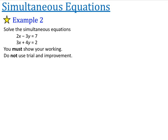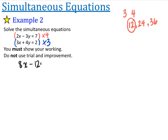Last time we made the x's the same. This time, just because I can, I'm going to make the y's the same. So I need to decide what do 3 and 4 have in common — they have 12 in common. I'm going to make them into 12 because I don't really need the numbers to be that big. So I'm going to multiply the first equation by 4 and the second equation by 3. We end up with 8x minus 12y is equal to 28, and 9x plus 12y is equal to 6.